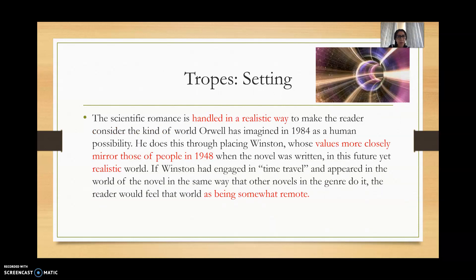The scientific romance is handled in a very realistic way to make the reader consider this kind of world Orwell has imagined as a totally plausible human possibility. He does this by placing Winston — whose values more closely mirror those of people living in 1948, the time Orwell wrote this — into a future that is yet realistic. If Winston had engaged in time travel and appeared in another world, as other novels in the genre do, the reader would feel that world was somehow remote and the potency of the political satire wouldn't take hold.